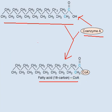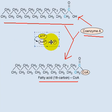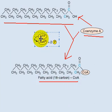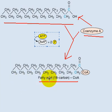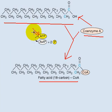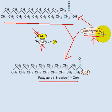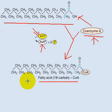Do we need anything for this reaction? Yes — in order for the fatty acid to combine with coenzyme A and become fatty acyl-CoA, we need ATP. One ATP will be converted to AMP, so we are investing energy in this reaction. The inputs are: fatty acid, coenzyme A, and ATP, and the product is fatty acyl-CoA.